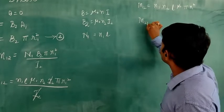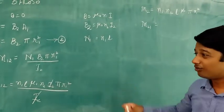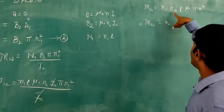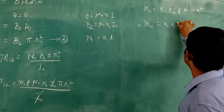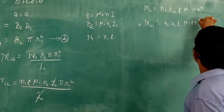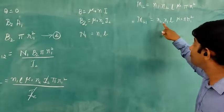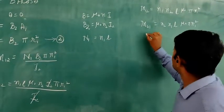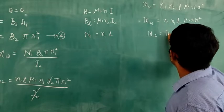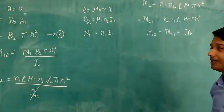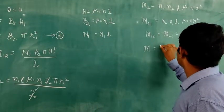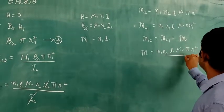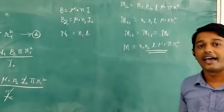Now for the mutual inductance of the second solenoid with respect to the first (M21), if we derive it similarly, we get the same equation with n1 and n2 swapped, but since multiplication is commutative, the result is the same. Therefore M12 equals M21 equals M, and the expression for mutual inductance is: M equals μ₀n1n2L × πR1².